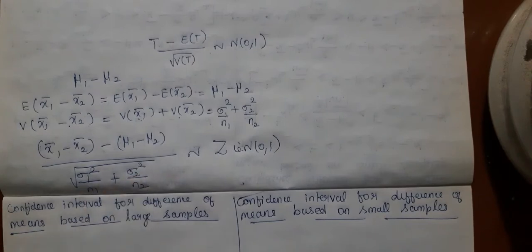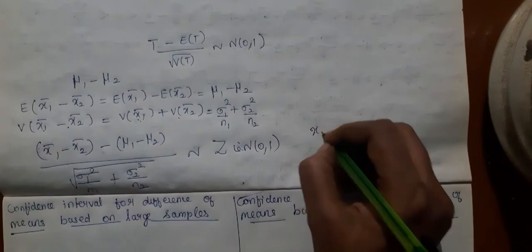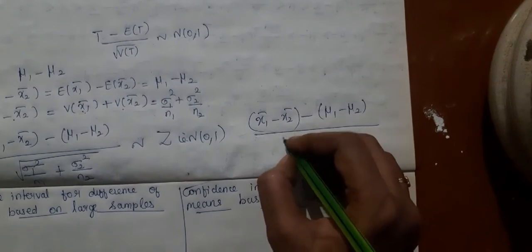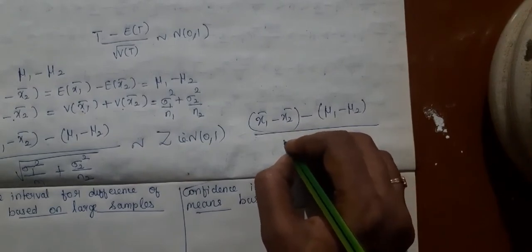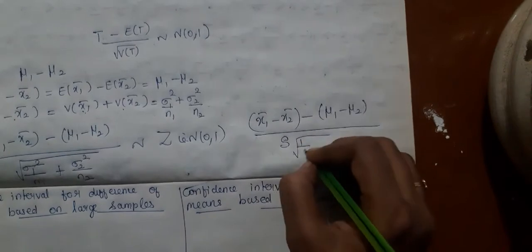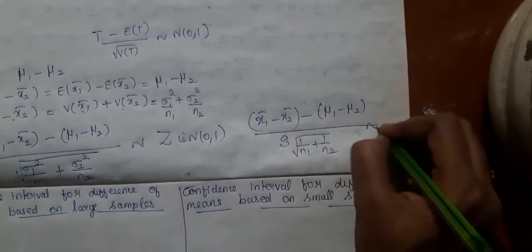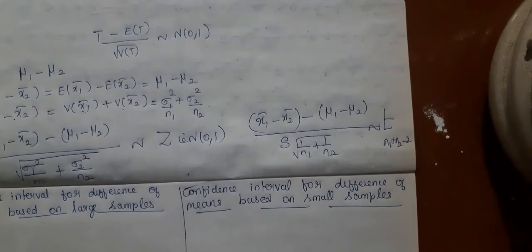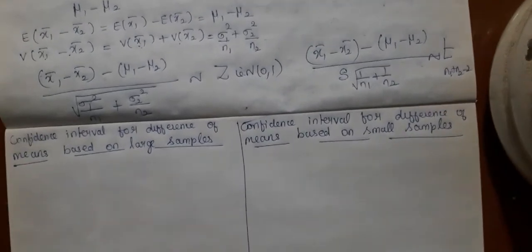When both the samples are of large size, you make use of this particular result. When the sample sizes are small, the population standard deviation is also unknown and the samples are independent. In this case, the statistic follows a t-distribution with n1 plus n2 minus 2 degrees of freedom. You are going to start with this point.